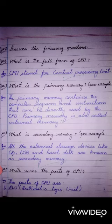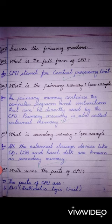Question number 2. What is the primary memory? Give example. Answer: Primary memory contains the computer programs and instructions that can be directly read by the CPU. Primary memory is also called internal memory.